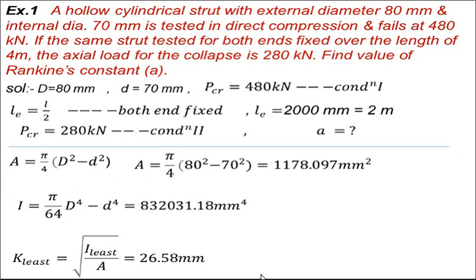A hollow cylindrical strut with external diameter 80 mm and internal diameter 70 mm is tested in direct compression and fails at 480 kN. If the same strut is tested for both ends fixed over a length of 4 m, the axial load at collapse is 280 kN. Find the value of Rankine's constant, small a. We will solve this by the Rankine's formula, first understanding the problem and the given quantities.